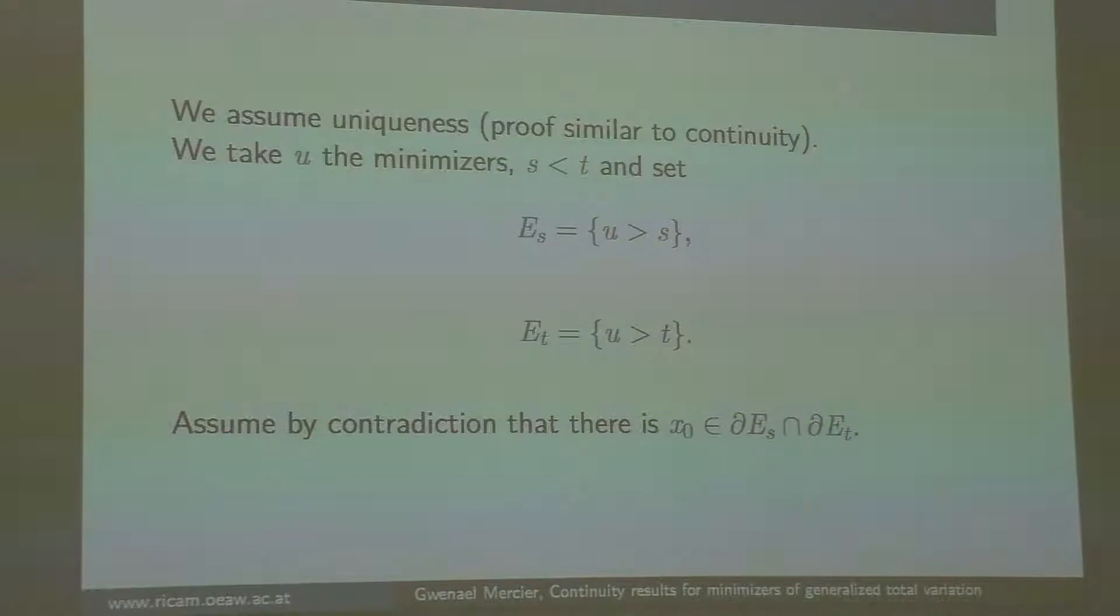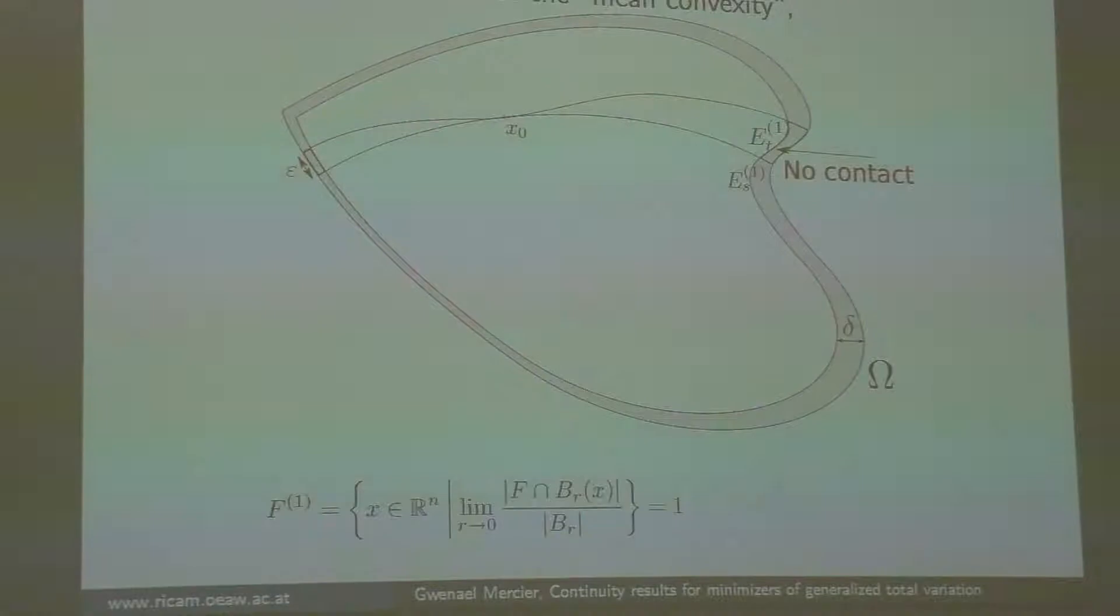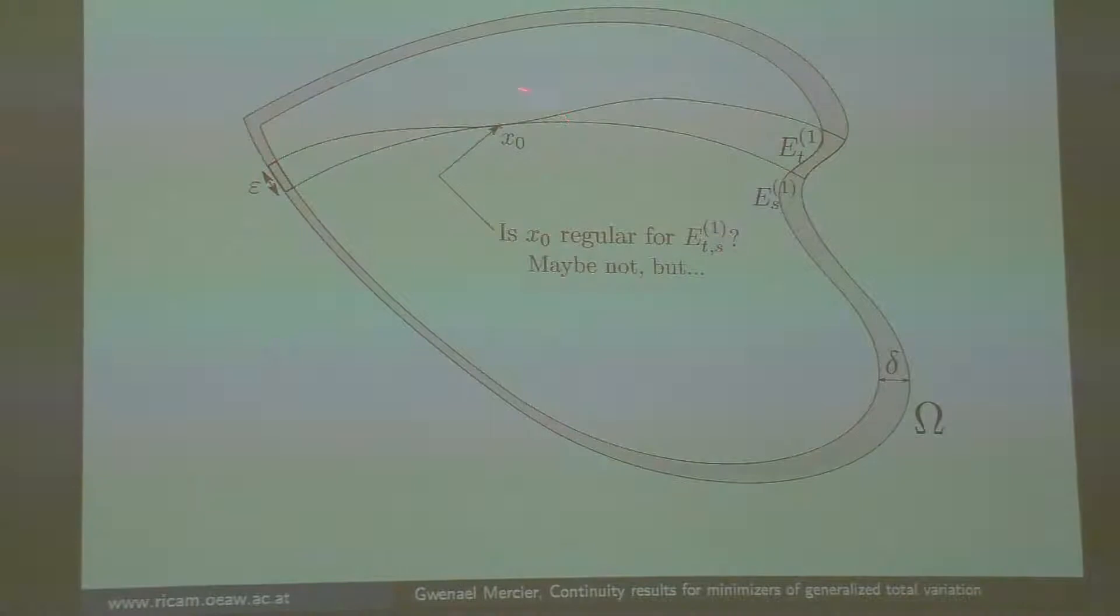You assume uniqueness. Let's imagine you have your minimizer. I want to prove that it is continuous, so I select two level sets, u bigger than s and u bigger than t, and I want to prove that their boundary doesn't touch. I do that by contradiction. Let's imagine they touch. The situation is this one. Thanks to the Dirichlet condition at the boundary, and there was a little technical assumption on the boundary, I can assure that there is absolutely no contact here on a layer close to the boundary between these two level sets. Here you can see that I replaced E_t by E_t with an index 1—that's to avoid the almost everywhere problems, so it's just technical, not important.